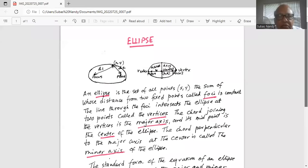I have drawn two pictures of an ellipse. An ellipse is the set of all points (x, y) such that the sum of whose distance from two fixed points called foci is constant. That is, anywhere x and y located on the ellipse, the sum of d1 plus d2 is constant.